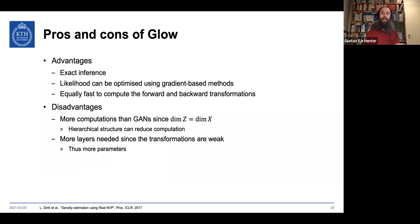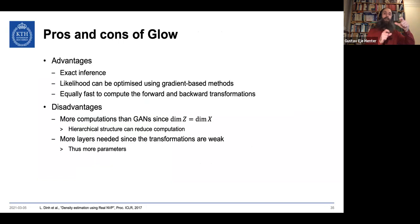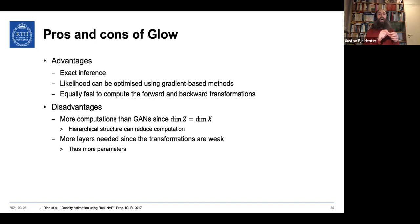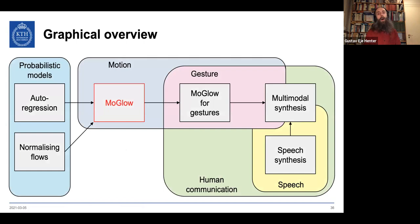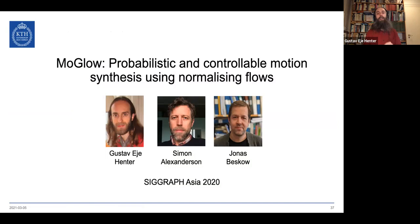Advantages of normalizing flows: we can compute likelihoods and optimize using gradient-based methods. It's equally fast in both directions — computing likelihoods or sampling. Disadvantages: the latent space must have the same dimensionality as the observations, unlike GANs. We can mitigate this by using different depths for different z-values. We also need lots of parameters since the transformations are invertible and thus weaker individually. But it's easier to make a good model fast than to make a fast model good.